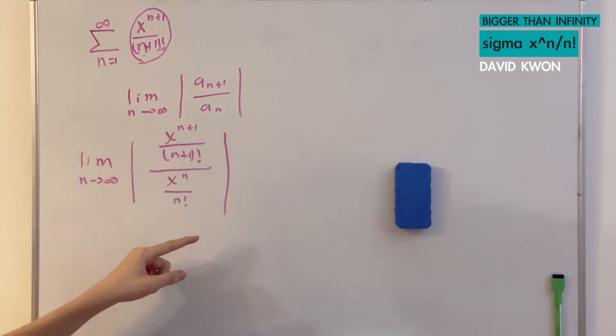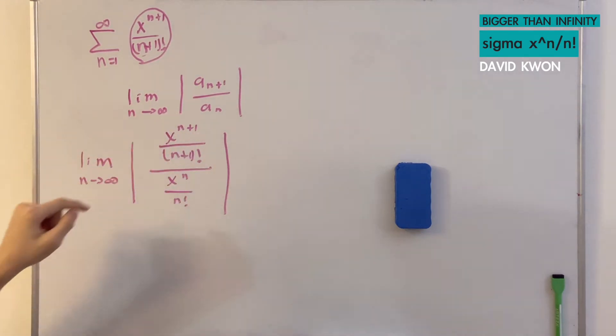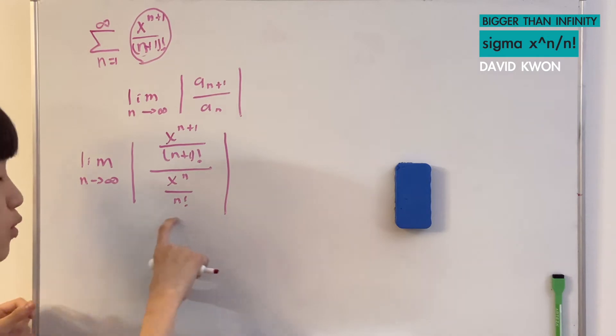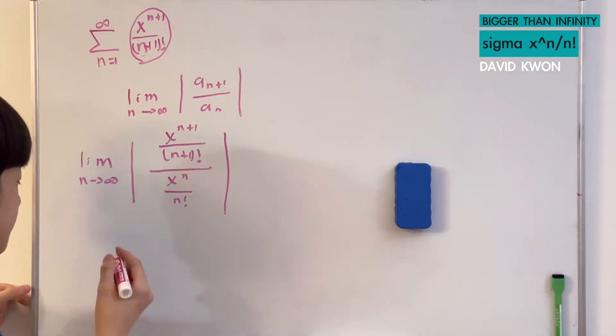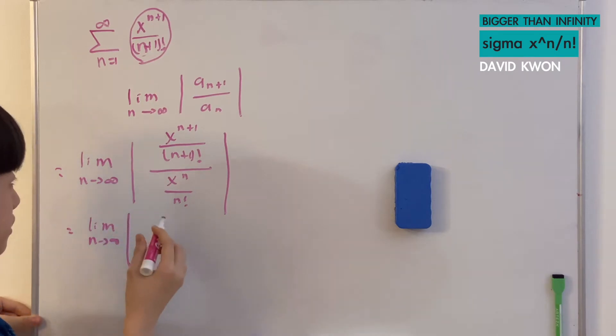So a sub n+1 is this, so let's write it here. We will simplify this long equation into a more real equation.